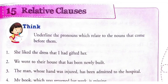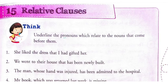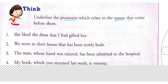Today's topic of discussion is relative clauses, chapter number 15, page number 121. First, what is provided: underline the pronouns which relate to the nouns that come before them. You'll be having a pronoun and a noun that comes before it.